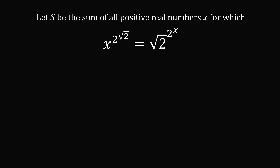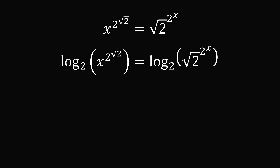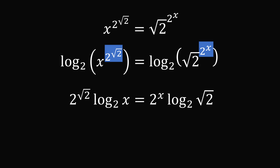To get started, note that s is the sum of all positive real numbers x, meaning x is greater than 0, and we can use our normal exponent and logarithm rules. To simplify this equation, we'll apply log base 2 to both sides. We can now bring down the exponents: 2 to the power of root 2 multiplied by log base 2 of x equals 2 to the power of x multiplied by log base 2 of square root of 2.